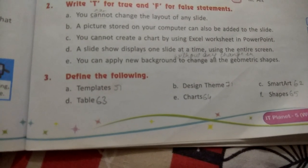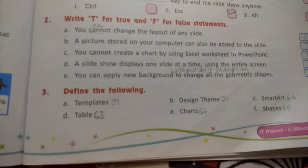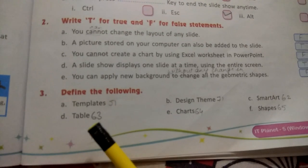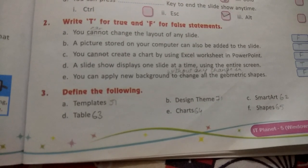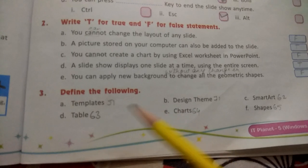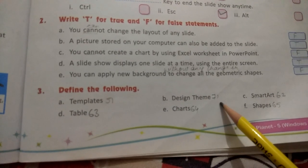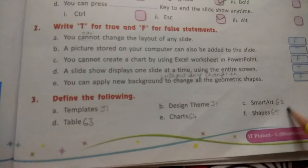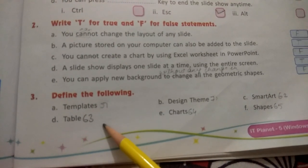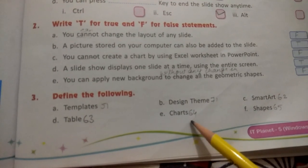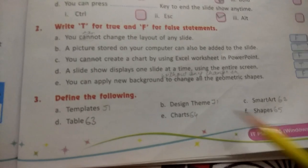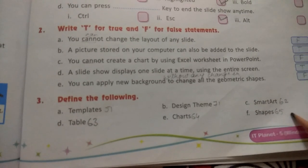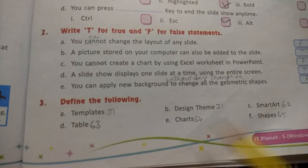Now Exercise number three: define the following. A: template - write down page number 51. B: design theme - write down 71. C: SmartArt - write down 62. D: table - write down 63. E: charts - write down 64. And F: shapes - write down 64, 65. Please take out page number 51 for answer 3A.